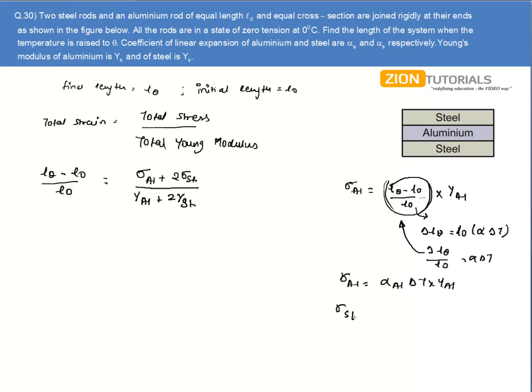Similarly for steel, I have sigma for steel as alpha for steel times delta T times Young's modulus of steel. So I substitute both of these over here.